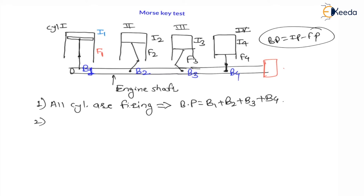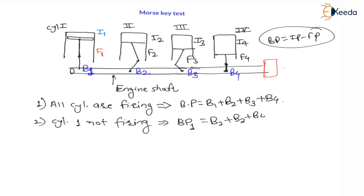Observation 2: cylinder 1 is not firing. Cylinder 1 not firing means we will not get brake power from cylinder 1 — we get B2, B3, and B4 only. So the brake power when cylinder 1 is not firing equals B2 + B3 + B4. That means cylinders 2, 3, and 4 are firing.